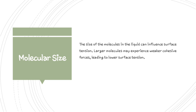The next parameter is molecular size. The size of molecules in a liquid can influence surface tension. Larger molecules may experience weaker cohesive force, leading to lower surface tension — that is, surface tension is inversely proportional to molecular size. Compare the surface tension of water and a heavy liquid like mercury. Mercury has larger molecules, resulting in weaker cohesive force and lower surface tension compared to water. Therefore, an inverse relation exists between molecular size and surface tension.